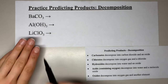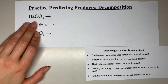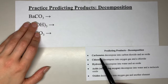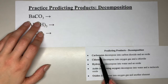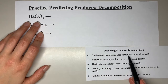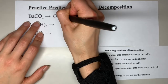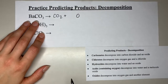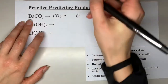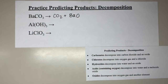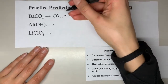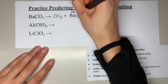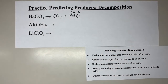The first one is barium carbonate. We are going to look at carbonates on the reference sheet — carbonates decompose into carbon dioxide, so CO₂ is our first product, and an oxide. To make the oxide, we bond the barium to an oxygen. We crisscross: barium is +2, oxygen is −2 — equal and opposite, they cancel out, giving us BaO. The products for barium carbonate are CO₂ and BaO.